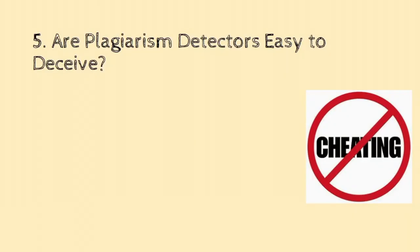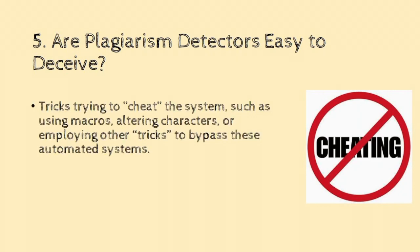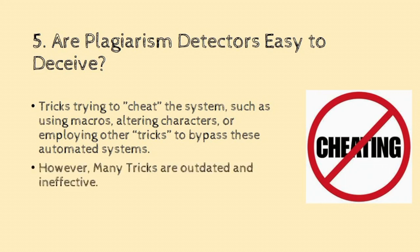Are plagiarism detectors easy to cheat? Tricks to cheat the system — such as using macros, altering characters, or employing other tricks to bypass automated systems — are available on the internet. You can type the name of the software along with hacking tricks on YouTube and get enormous results. However, many tricks are outdated and ineffective, as plagiarism checker software continuously monitors those tricks and adjusts accordingly. Beyond all this, trying to deceive plagiarism detectors is not advisable.